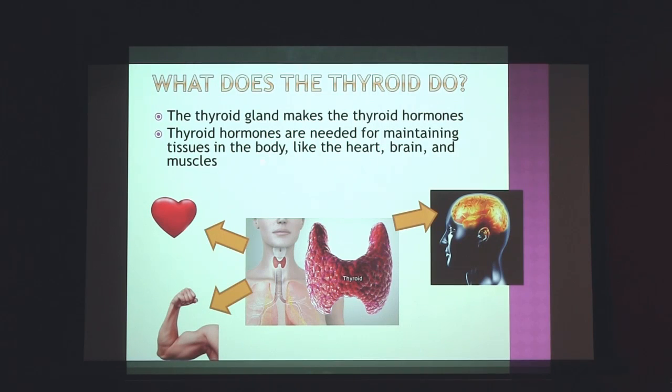What does the thyroid do? Why do we need it? The thyroid gland makes thyroid hormones, of which there are several. Thyroid hormones are needed for maintaining the tissues in the body — things like the heart, the brain, muscles, and many other parts of the body. It sort of acts as the fuel of the body. Thyroid hormones are critical for the functioning of entire bodily health.